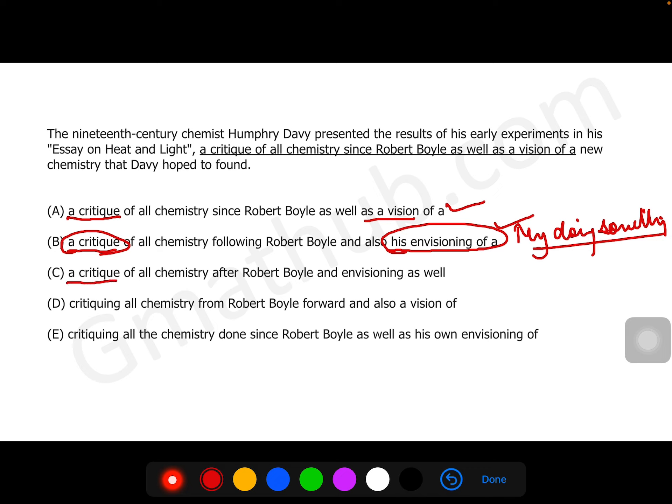Critique and envisioning—this is not parallel. Envisioning is ing form of verb, a critique is an action or a noun. So this is out. Critiquing and a vision of—critiquing is ing form of verb and a vision is a noun, so not parallel. Same here, critiquing and his own envisioning. We have already seen this is a noun. So critiquing is not a noun. This is out. This is out. Left with option A and B.